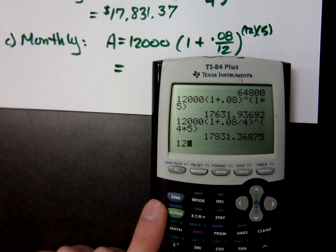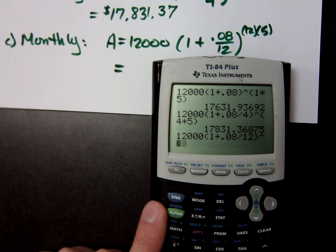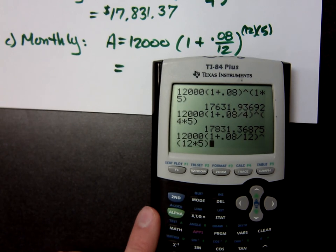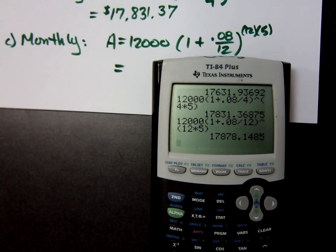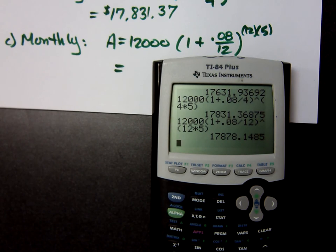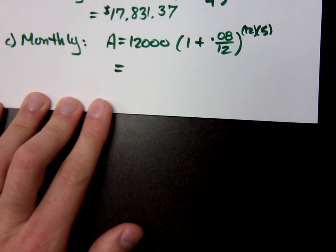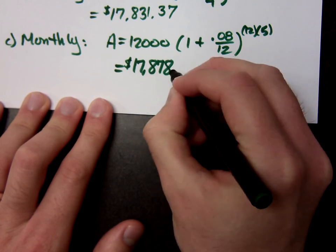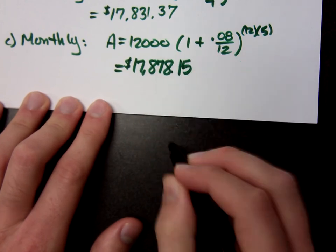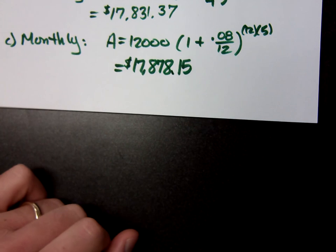Let's see, it better be more. 12,000, 1 plus .08, divided by 12, which is the number of months, raised to the 12 times 5. Yes, you could just say 60. That's even more money! But you know what they say, more money, more problems. There we go, so I end up with more money. So the more compoundings I have, the more money I make. That's fantastic.